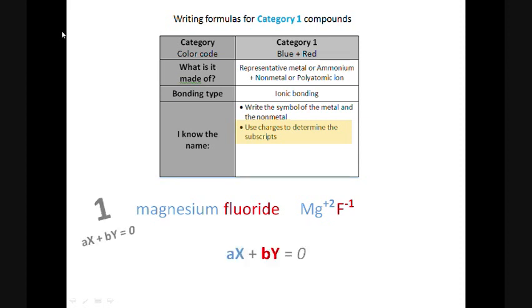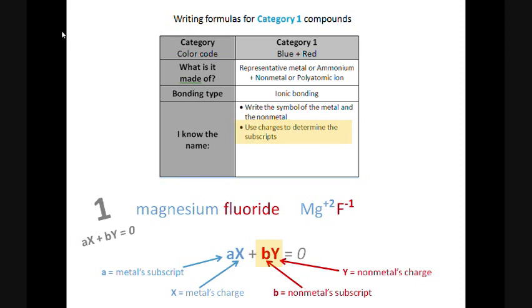Here's the first method. I call this ax plus by equals 0. We start with an equation, ax plus by equals 0. And each letter stands for something we either know already or something that we need to know. The first part is all about the metal. A stands for the metal element subscript. And x stands for the metal element's charge. The second part of the equation is all about the nonmetal. B stands for the nonmetal element subscript. And y stands for the nonmetal element's charge. We need all four of these pieces of information in order to write the chemical formula. If you use this equation correctly, you can always solve for whichever pieces of information you're missing. And you have to make sure that all the pieces multiply and add up to 0. So let's put this into action. The pieces we do not know are the two subscripts. That's what we're trying to determine. The pieces we do know are the two charges. We can plug those in right away from the periodic table.